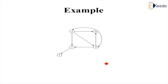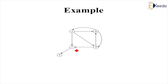Let's understand this with an example. We have a graph with 5 nodes: A, B, C, D, and E. Out of these, C and E are dead ends. However, this is not going to affect the HITS algorithm.